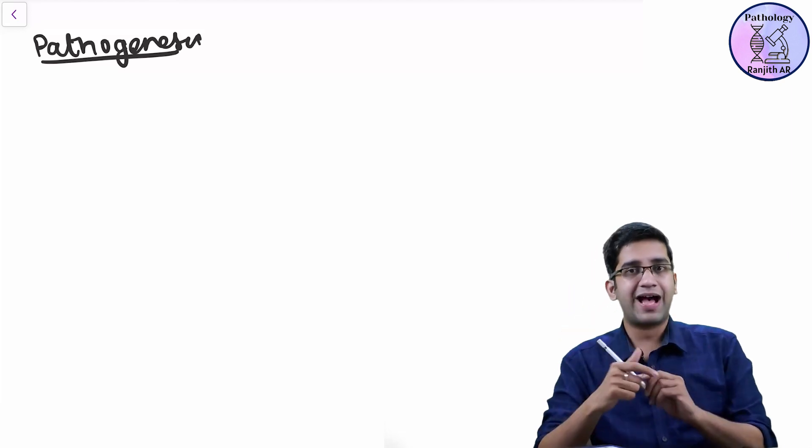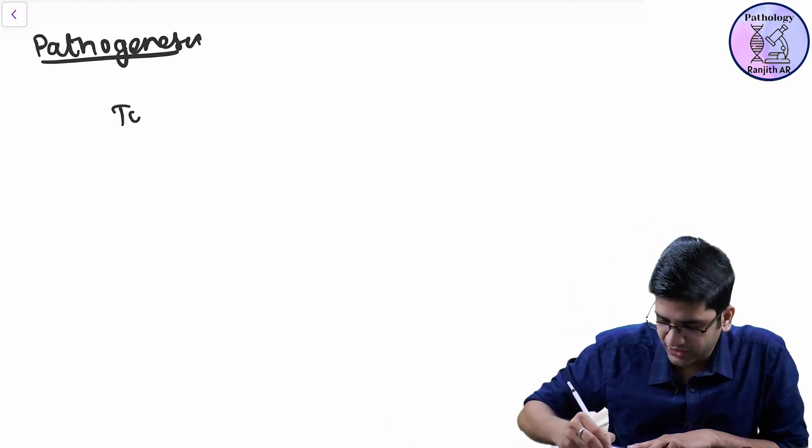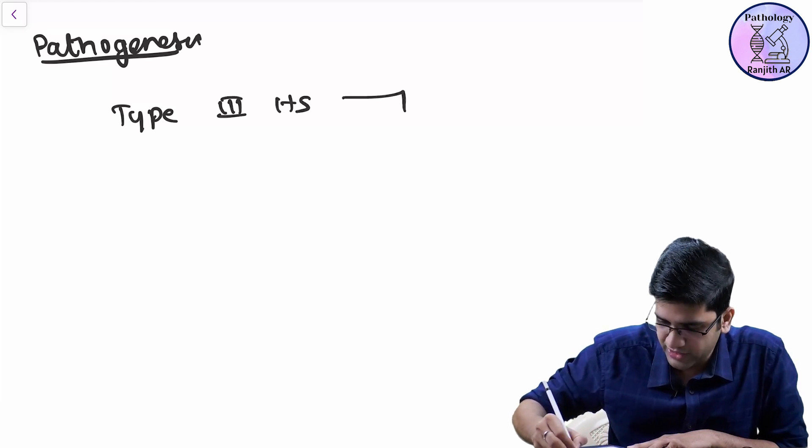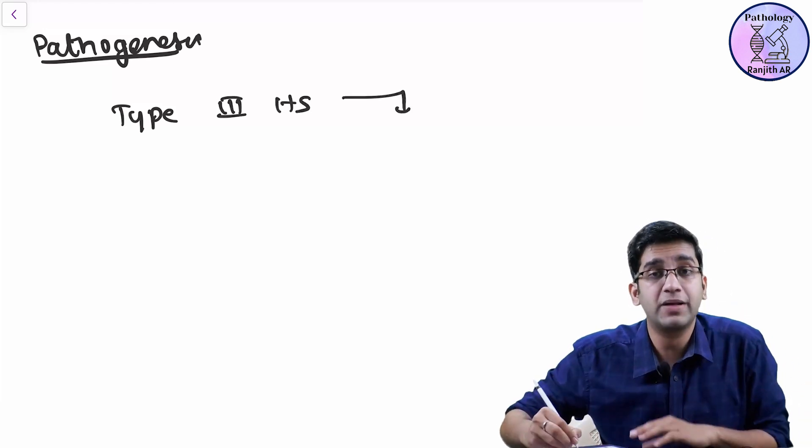So SLE, primary mechanism of action of SLE is a type 3 hypersensitive reaction. Type 3 hypersensitive reaction means it's an immune complex mediated damage.